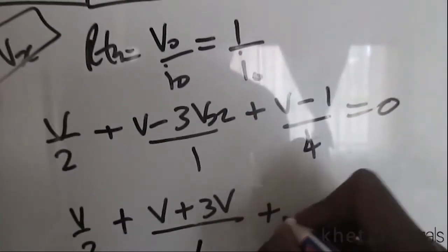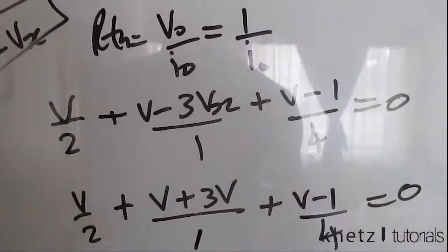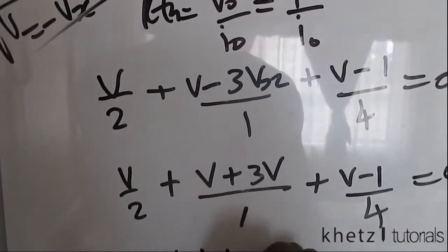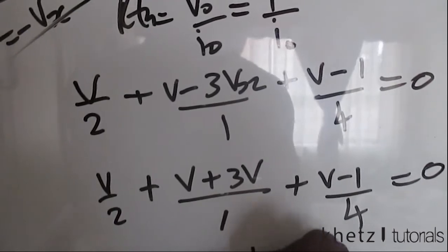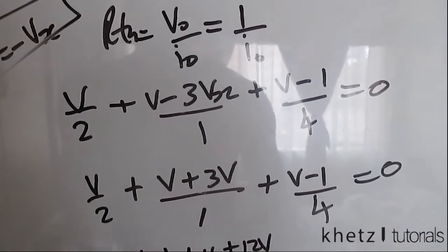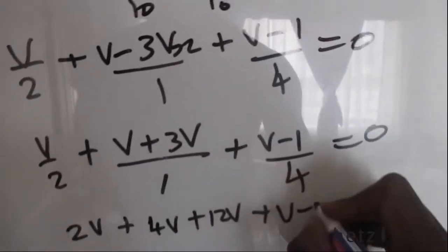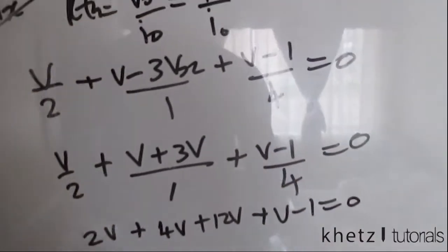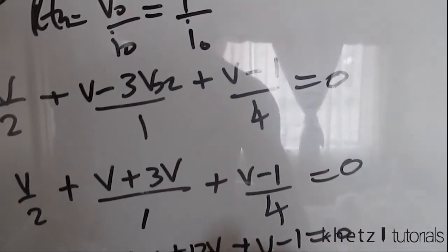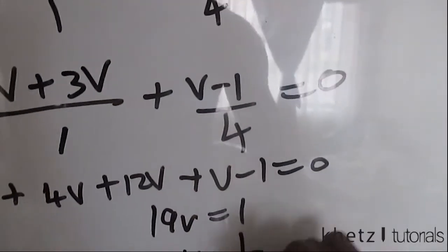Multiplying through by 4, we get 2v plus 4v plus 12v, and then plus v minus 1 equals zero. Adding the v terms: 2 + 4 + 12 + 1 = 19, so 19v equals 1, which gives v equals 1/19 volts.